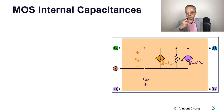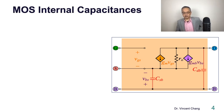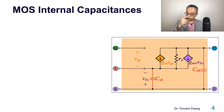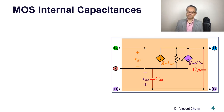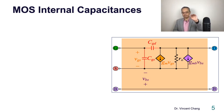Now let's address the MOSFET internal capacitances. The first two are source-to-body and drain-to-body. Next, gate-to-source and gate-to-drain. So four capacitances: source-to-body, drain-to-body, gate-to-source, gate-to-drain.